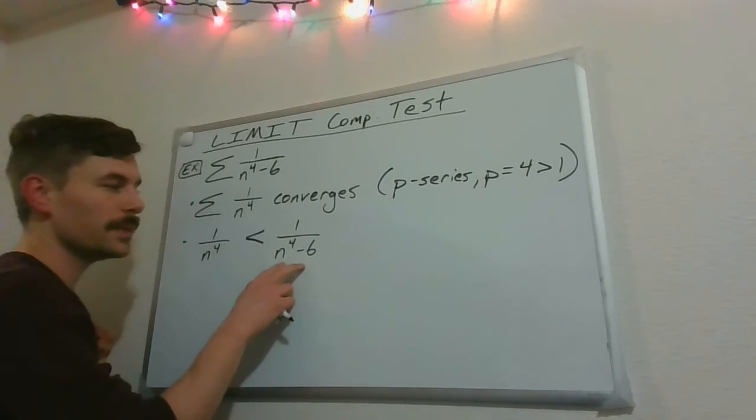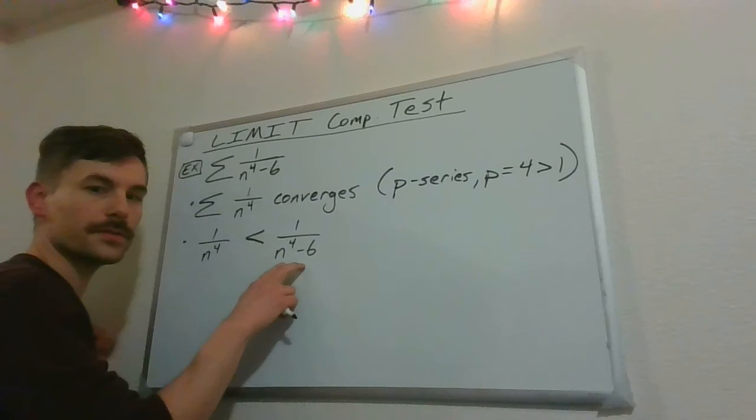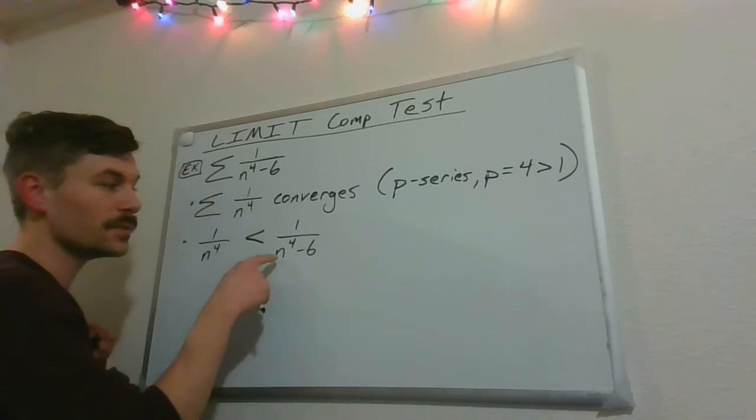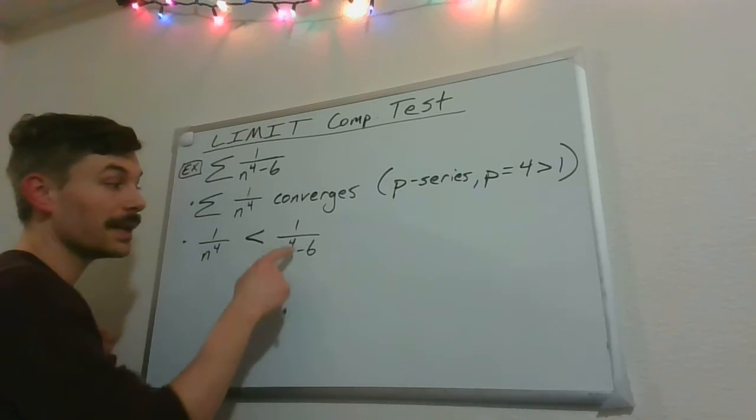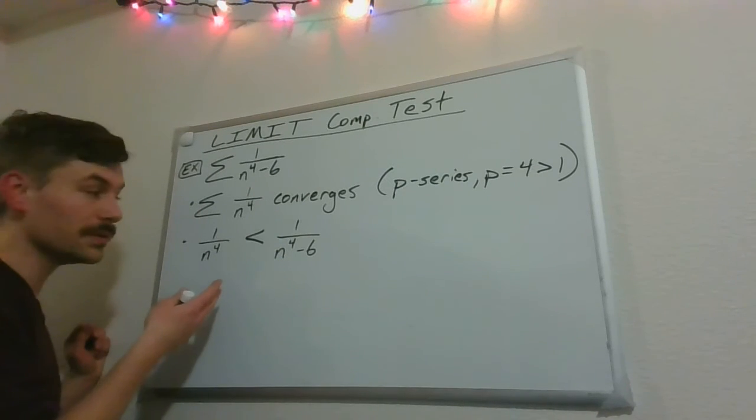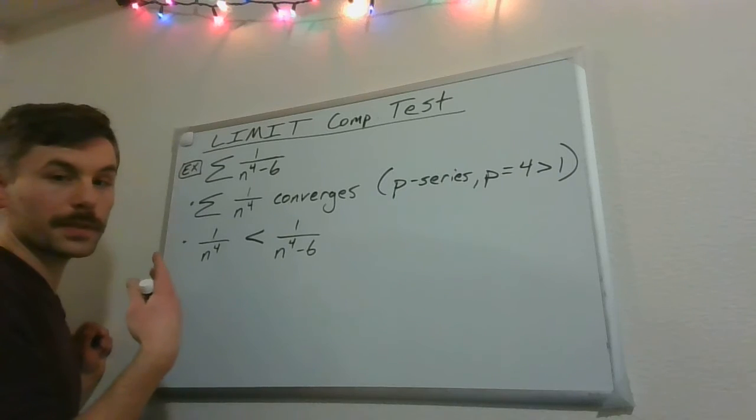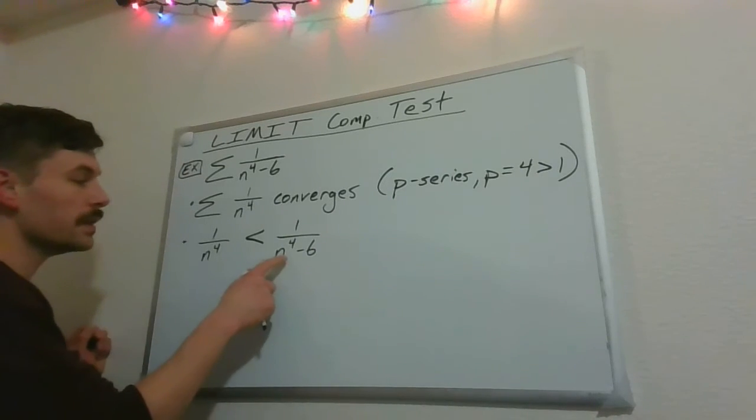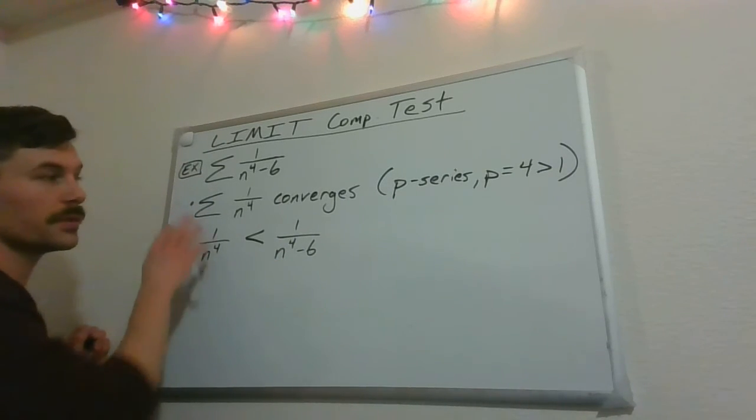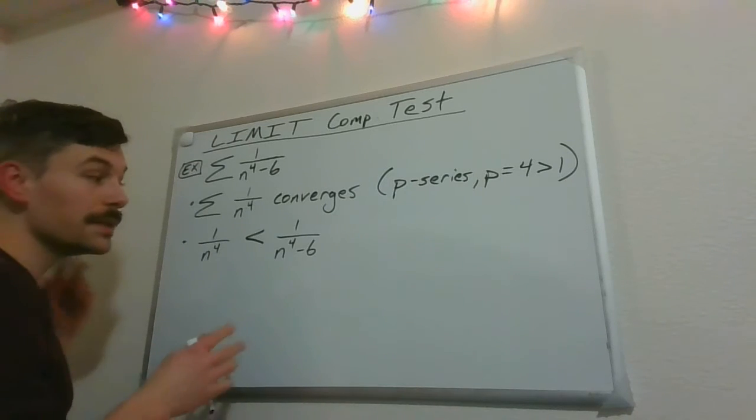Again, we have to be careful about certain values of n here. So, for example, when n is 1, this picks up a negative value. So it's not actually going to be true. But later on, even when n is something like 2, this ends up being larger than this. So we've got to be careful about our indices here.